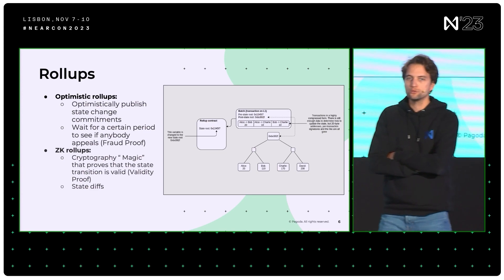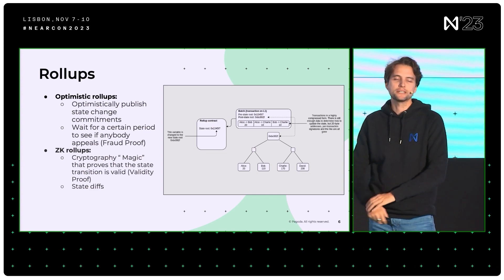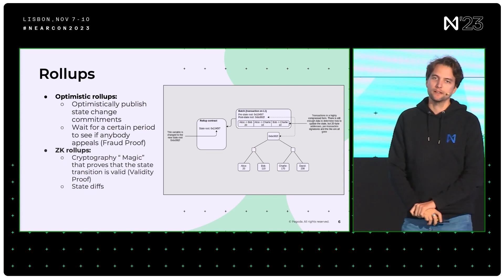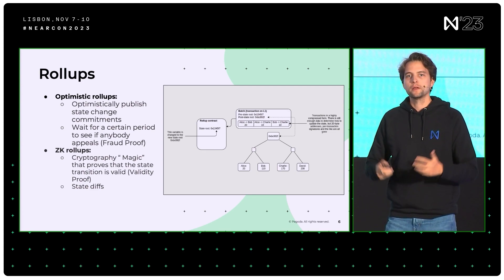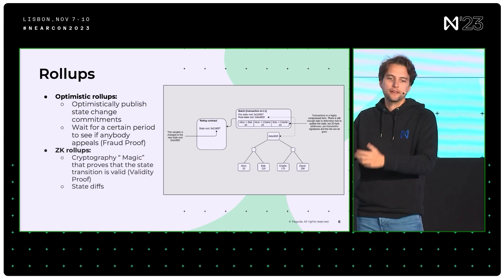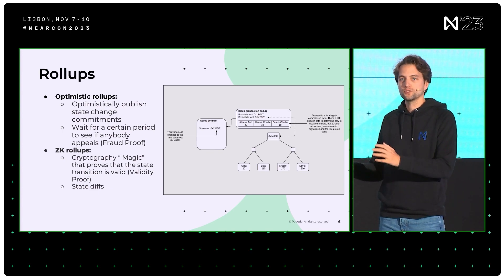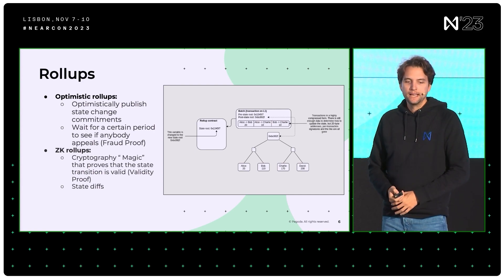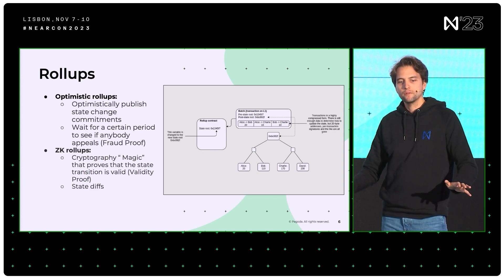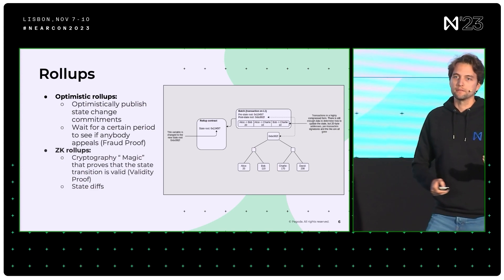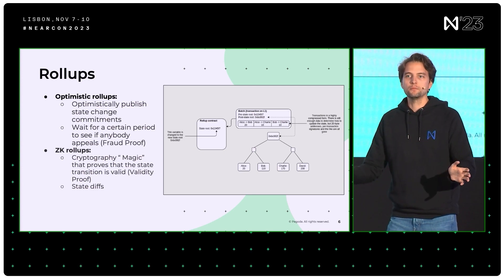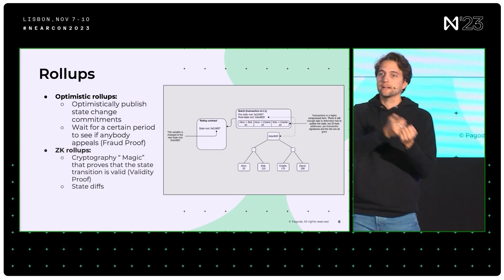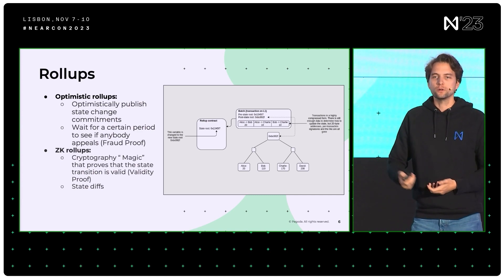There are two ways of doing this. The first is optimistic rollups — these super nodes optimistically produce state changes and state change commitments, and put them on an L1. They wait for a certain amount of time where if somebody who has a stake in that network comes and says there's a problem, here's my proof — called a fraud proof — then the L2 chain rolls back. That is why it's called optimistic rollups.